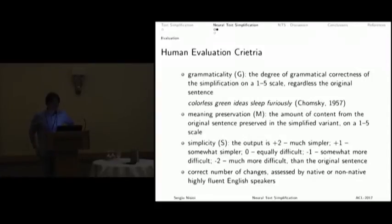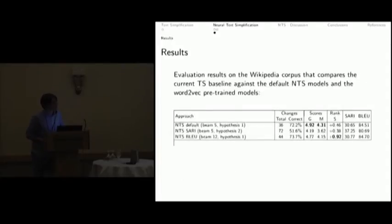Let's look at the human evaluation criteria that we used. We used four human evaluation criteria. Grammaticality, which is the degree of grammatical correctness of the simplification, regardless of the input. We don't care about the meaning. Meaning preservation is the amount of content that's being preserved from the input to the output by the model. Simplicity, as well. And the correct number of changes. We want to make sure that the system, as much as possible, generates changes that are correct, even if sometimes the system becomes a bit conservative.